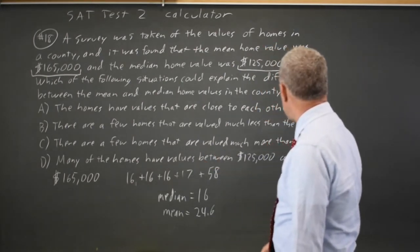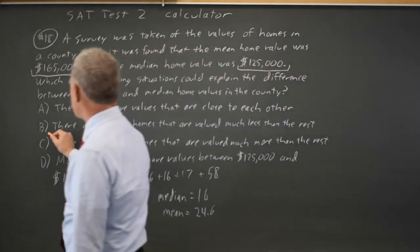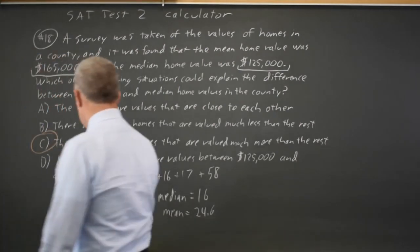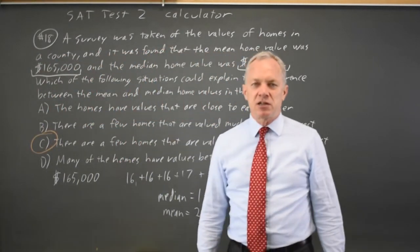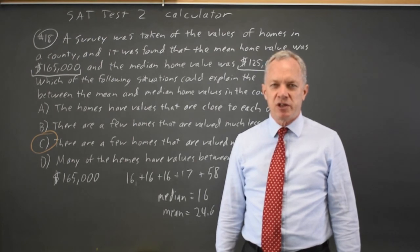Choice C: there are a few homes valued much more than the rest. That is correct. That's what we just discussed—that high outliers or extreme high values compared to most of the values pull the mean above the median.